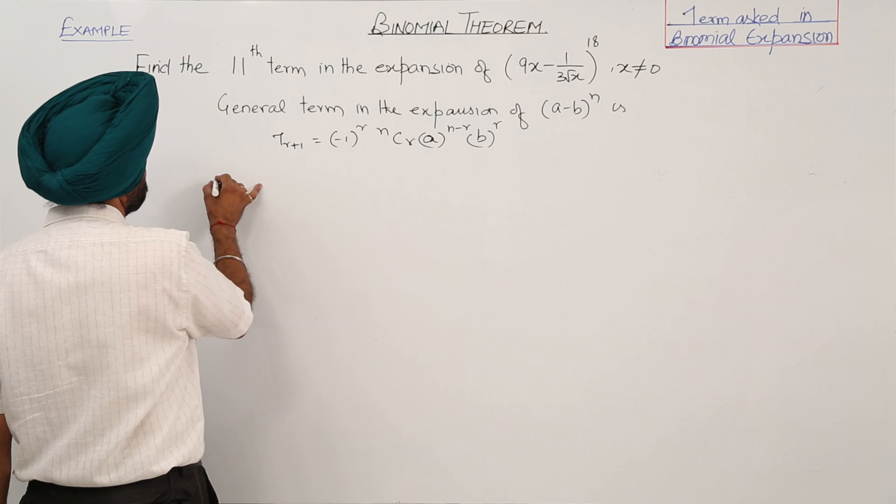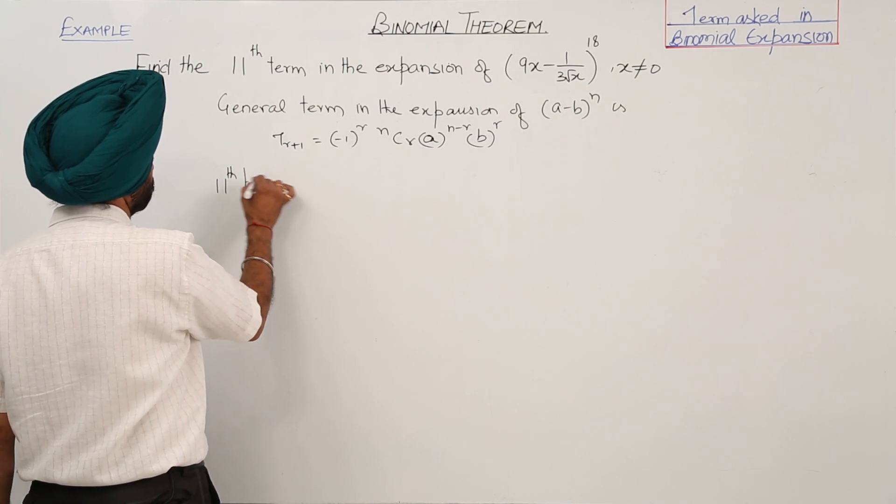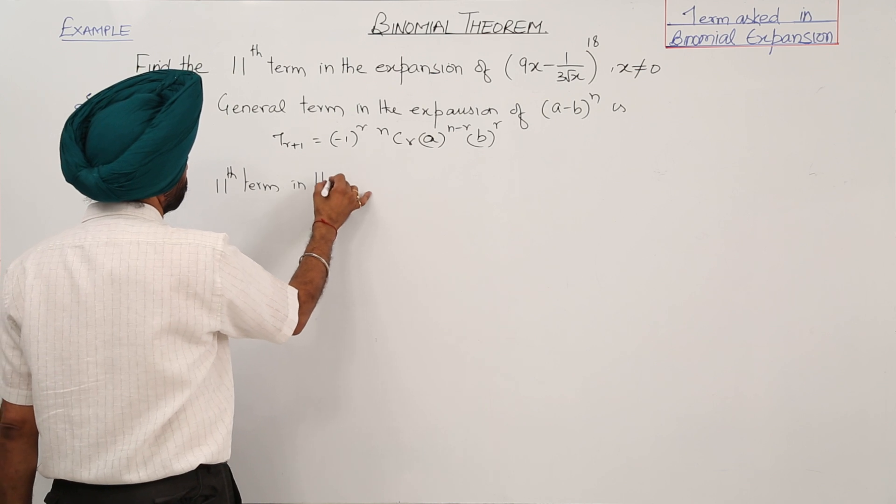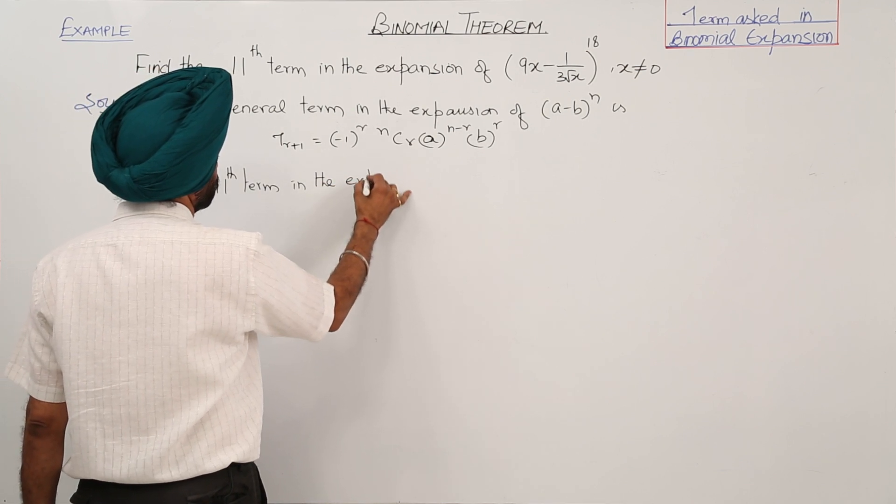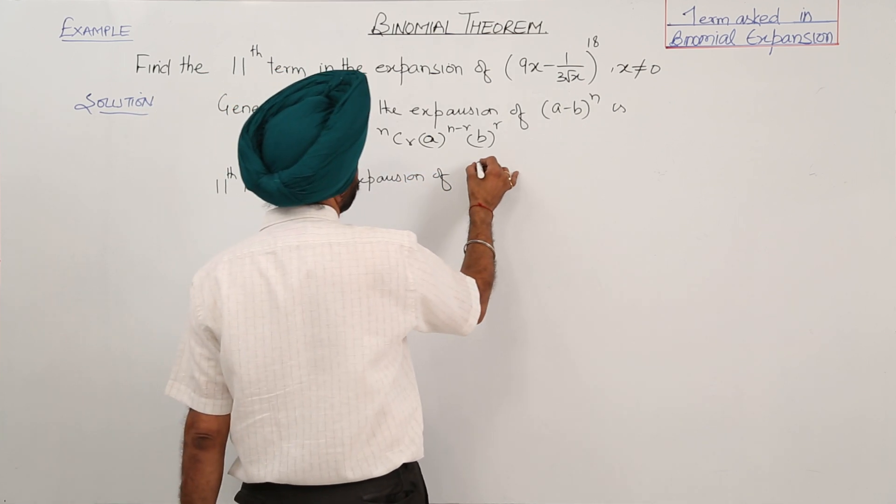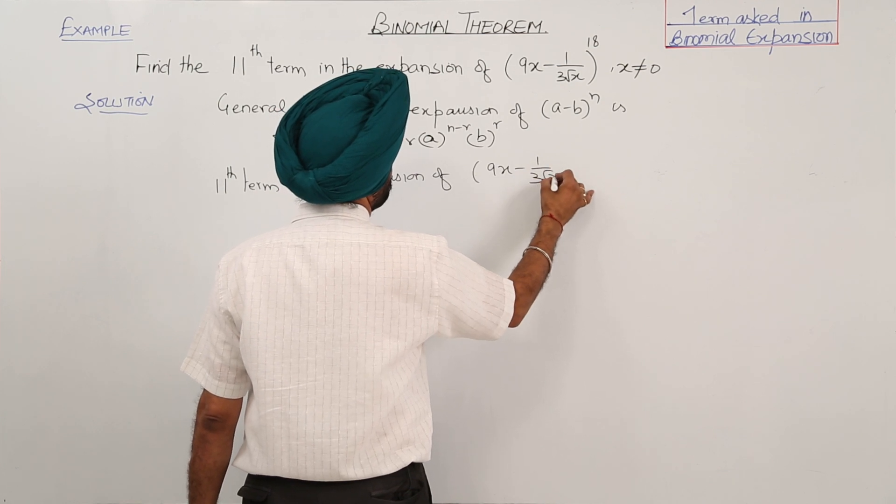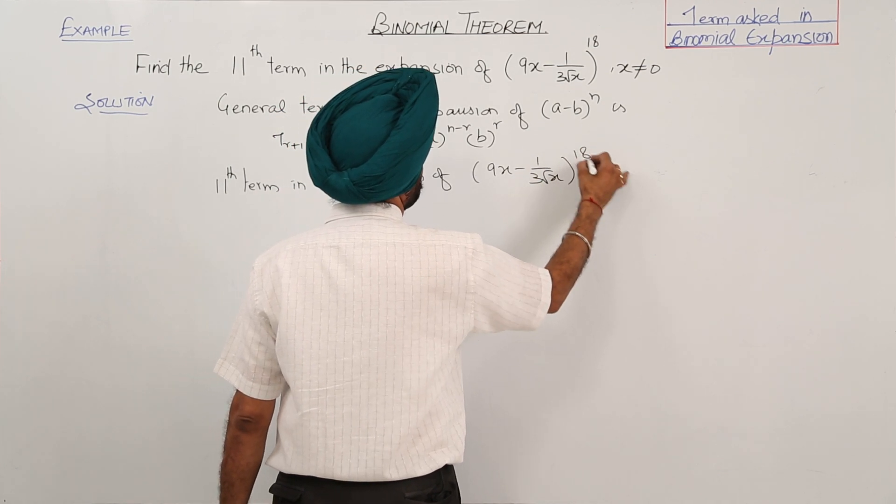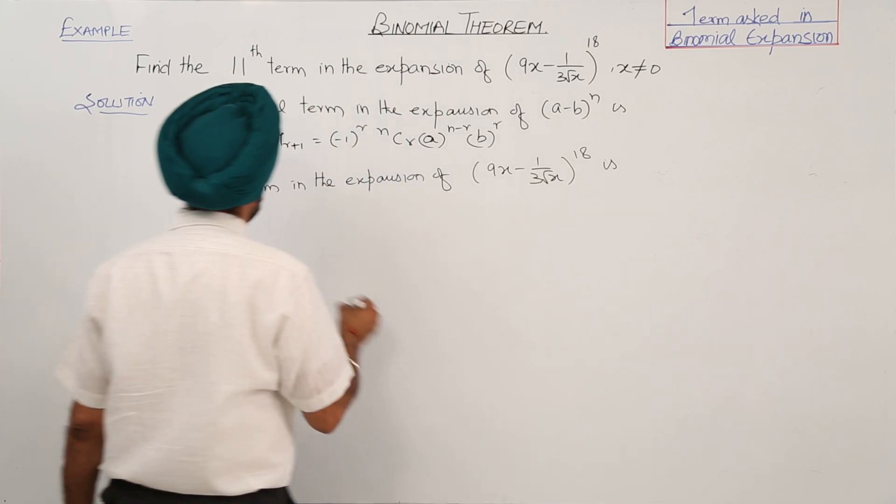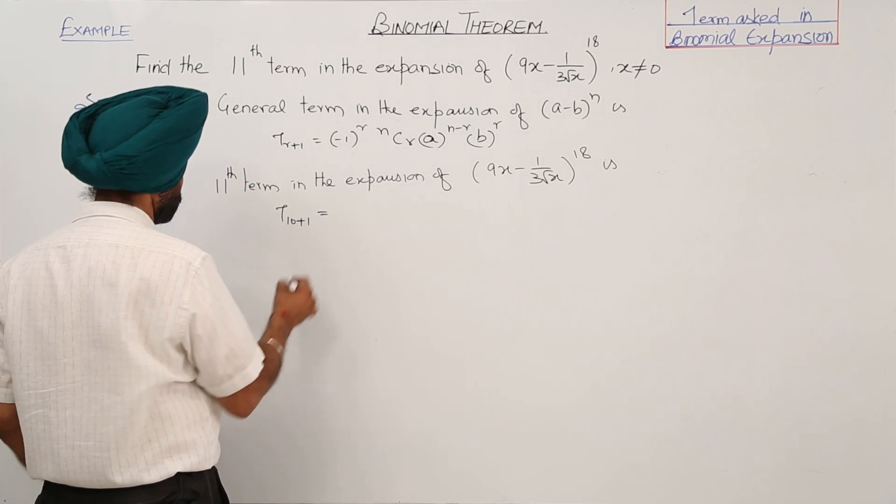Now the 11th term in the expansion of (9x - 1/(3√x)) raised to power 18 is t_(10+1), which is equal to...